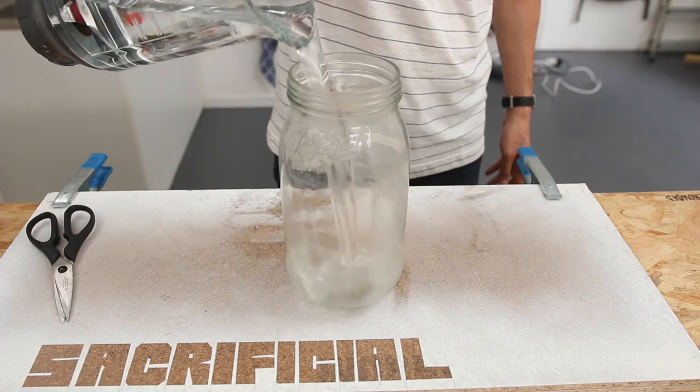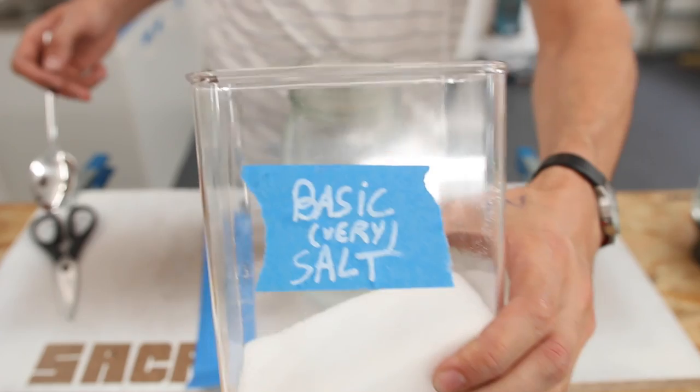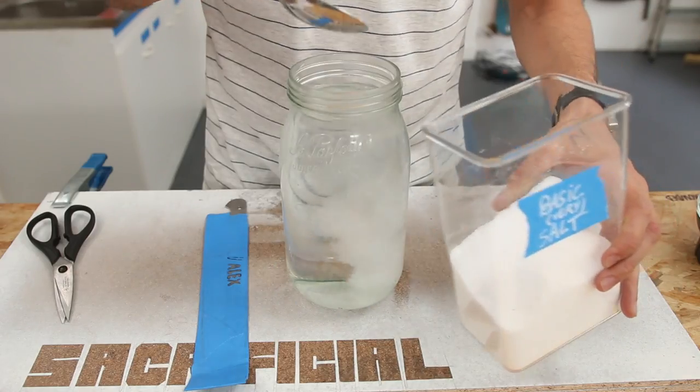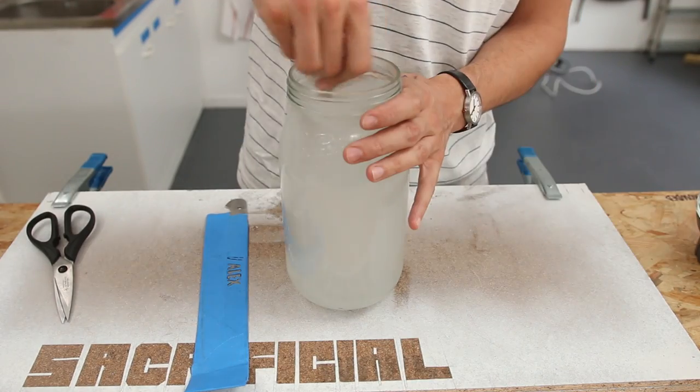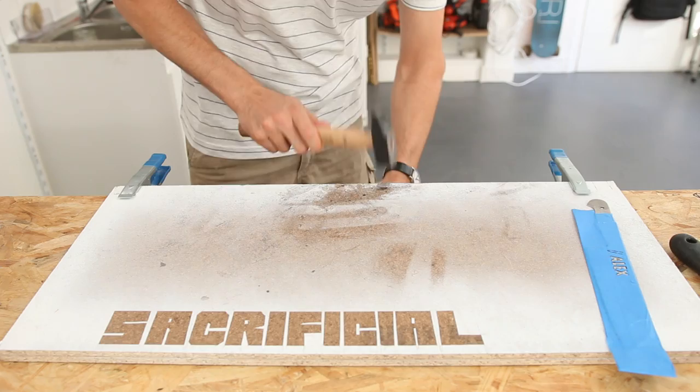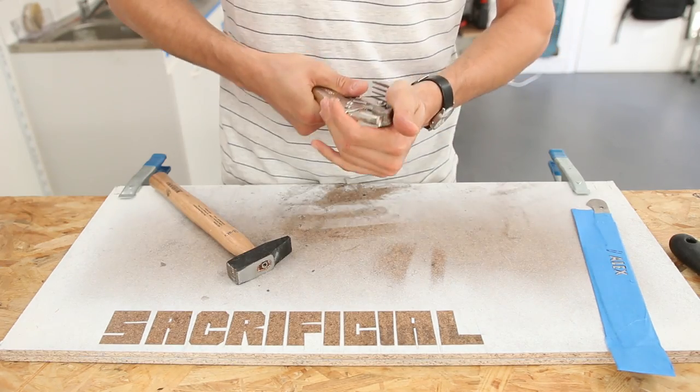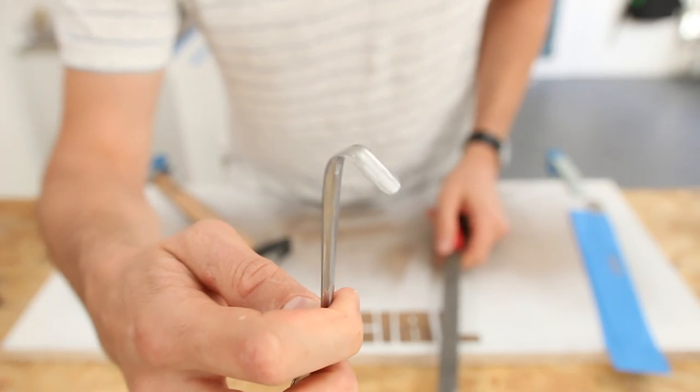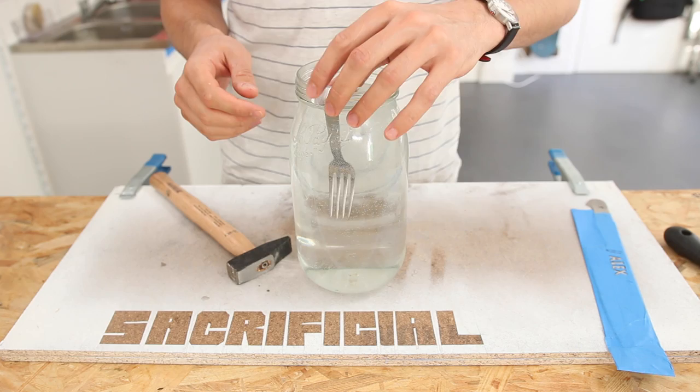Metal etching: fill up a glass jar with water and add 2 tablespoons of salt per liter. You also need a sacrificial piece of the same metal. In my case, I'm using a stainless steel fork from which I scraped any varnish off.